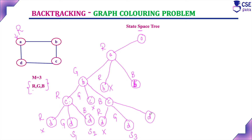Checking if blue can be assigned to D: C is already blue, so assigning blue to D is a dead end. Backtracking from C, all three color choices for D have been checked. Backtracking further to B, all three color choices for C (red, green, blue) under B=green have been checked. Backtrack to A and check the next possibility for B.